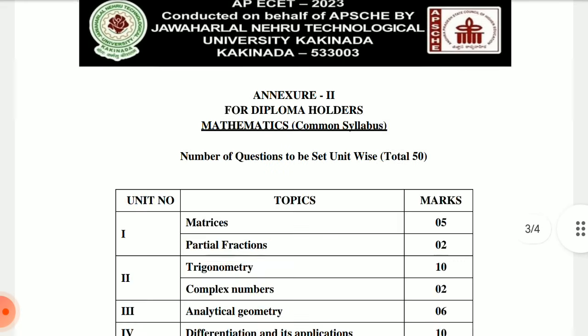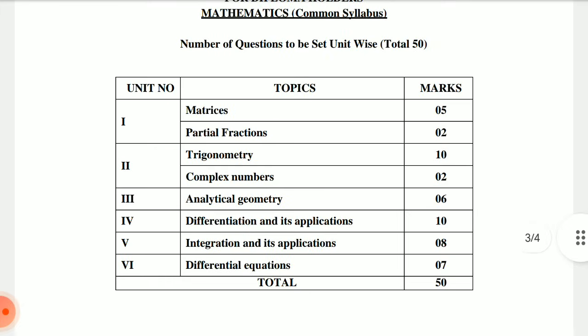Every unit has a specific marks weightage, which is clearly mentioned. From matrices, partial fractions, trigonometry, complex numbers — each unit has approximate marks. You can ask about 1–2 bits extra or less per unit — this is an approximation.